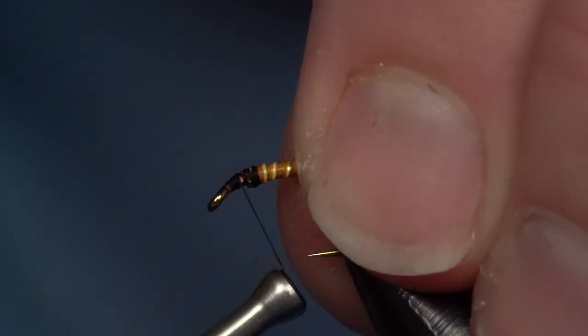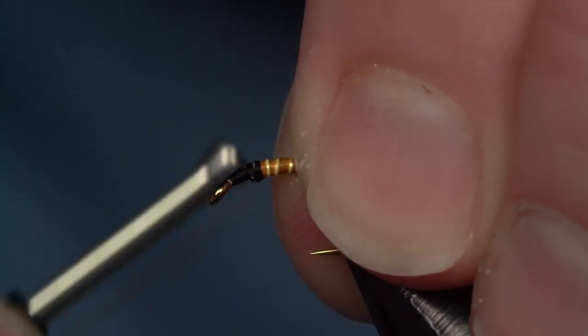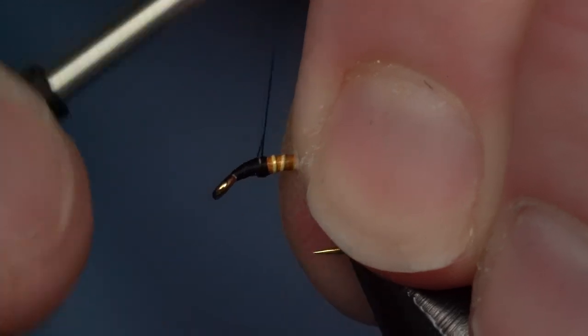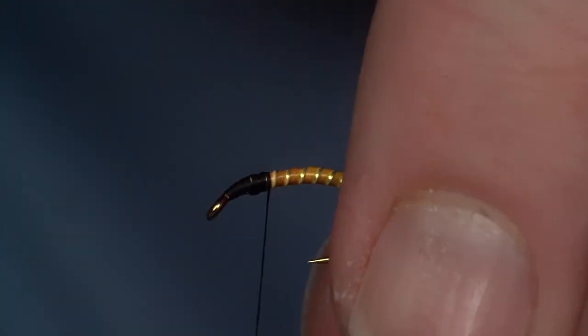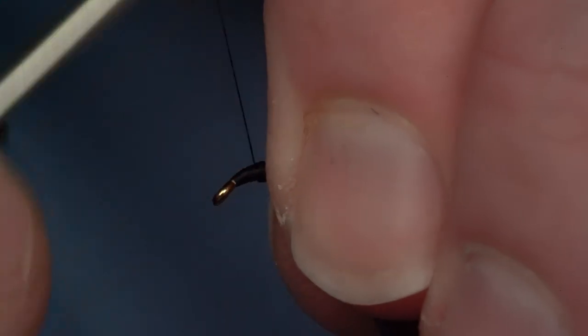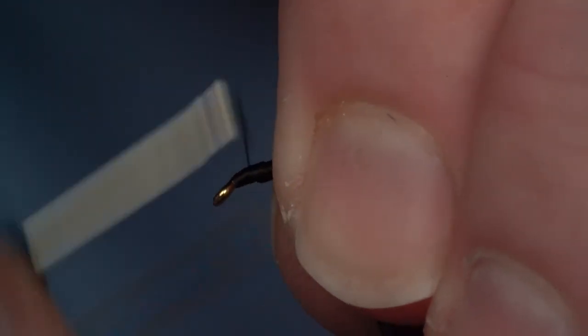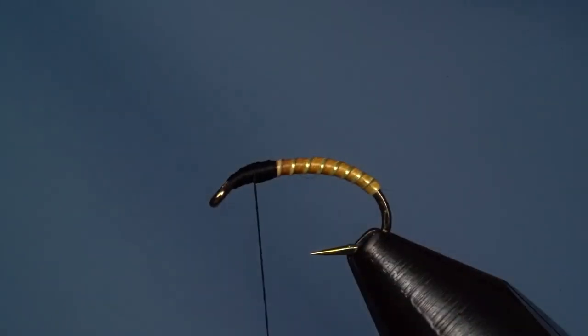Take our excess out and clean this up a bit. This will help create a taper as well. Wrapping back over everything, building that head. We've got one more material we're going to work into the mix: good old Flashabou.